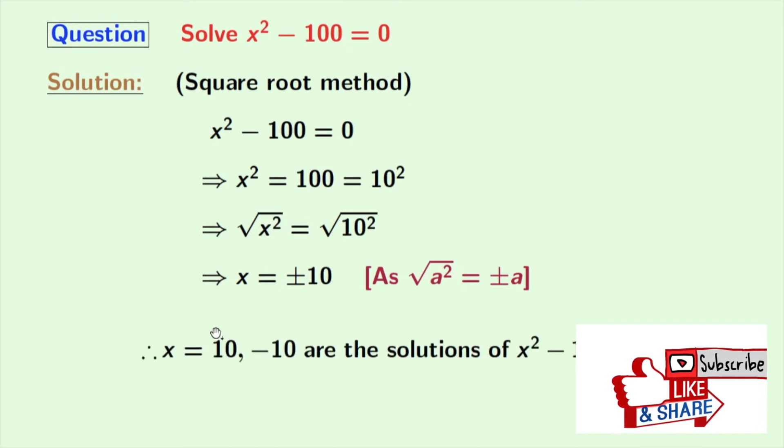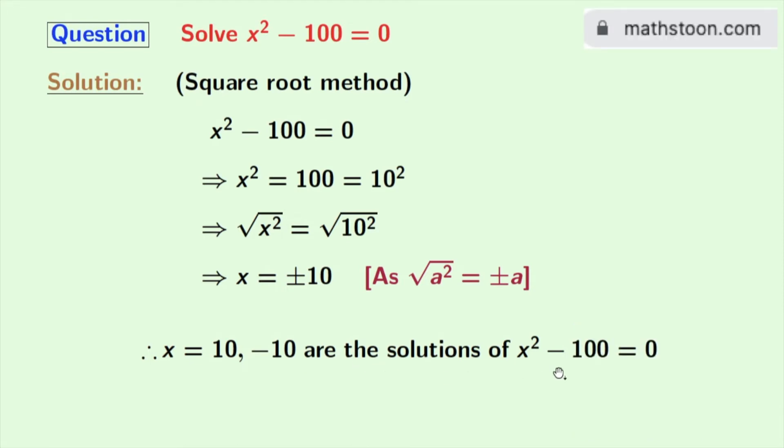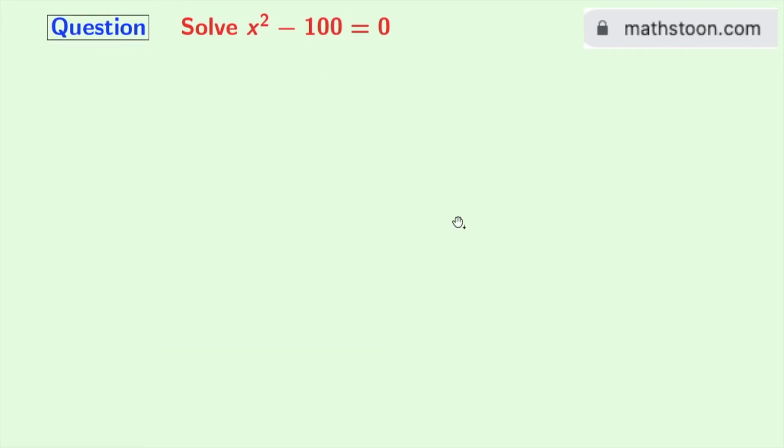So finally we get x equals 10 and minus 10, and these are the solutions of the equation x squared minus 100 equals 0. Now we will solve the same equation using another method.